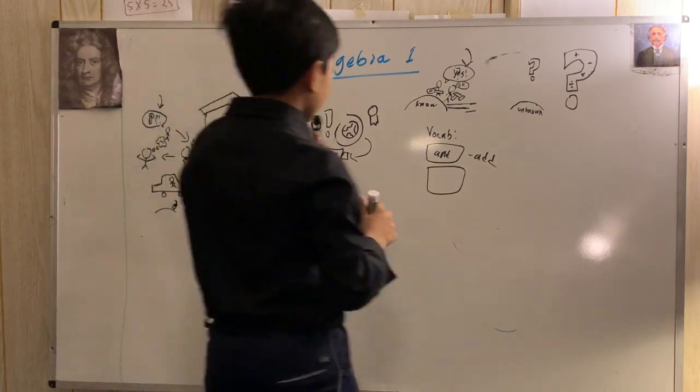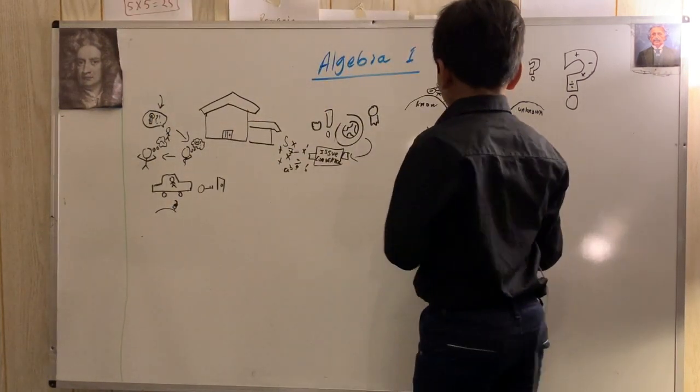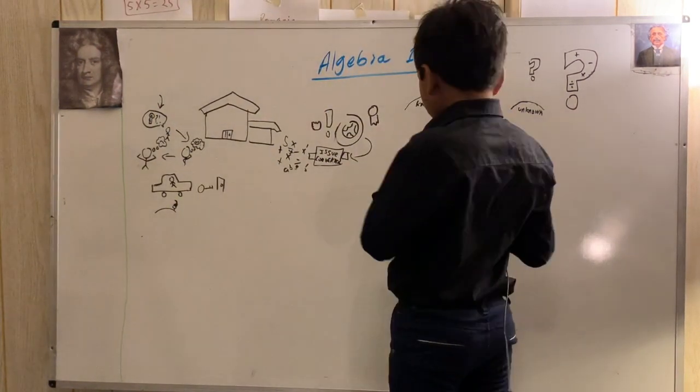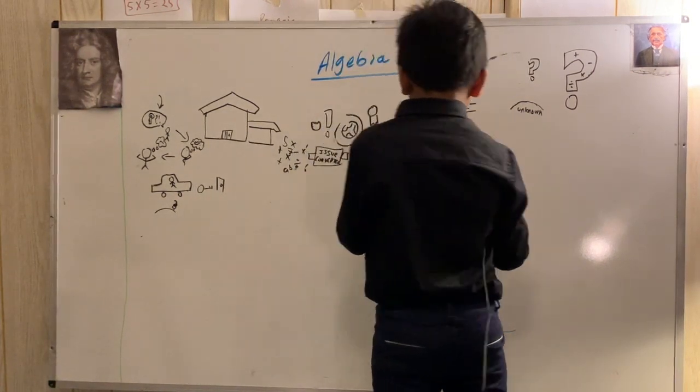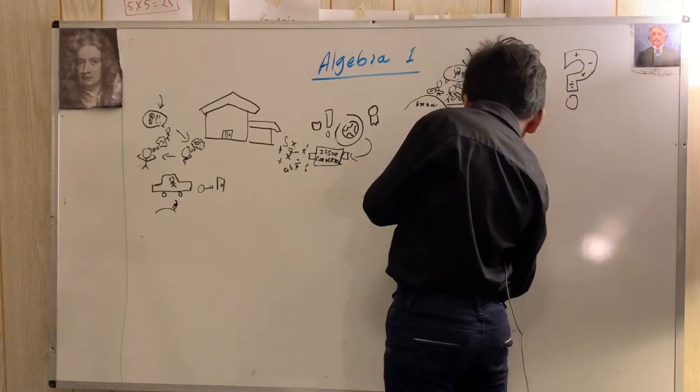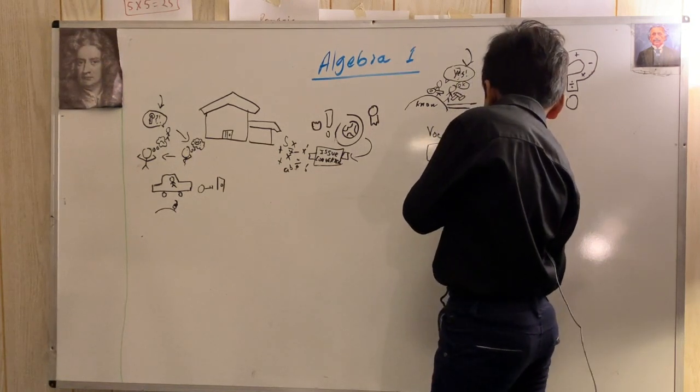Oh yeah, I forgot our mystery vocab word. Our next and final vocab card is OF, which means times or multiply.